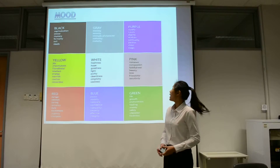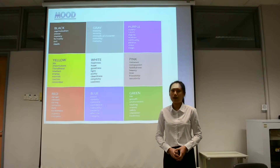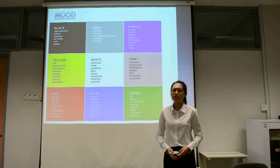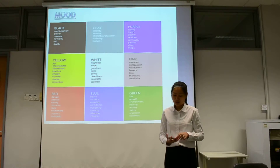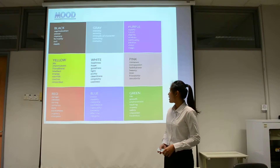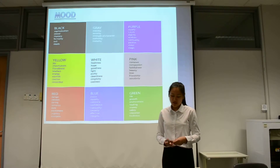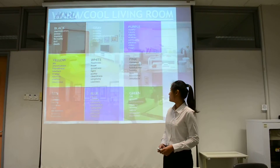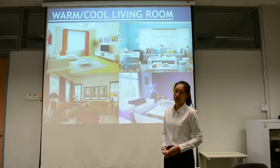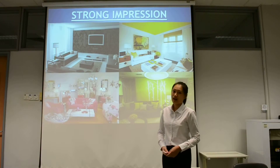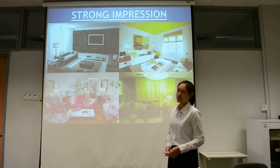Purple is usually associated with royalty and wealth. Yellow makes people feel cheerful, but having too much yellow in a room will make us feel frustration and anger. Red increases one's pulse, heartbeat, and blood pressure. It brings people together, stimulates conversation, and leaves a strong first impression. These are examples of warm and cool living rooms, and rooms that leave a very strong first impression.